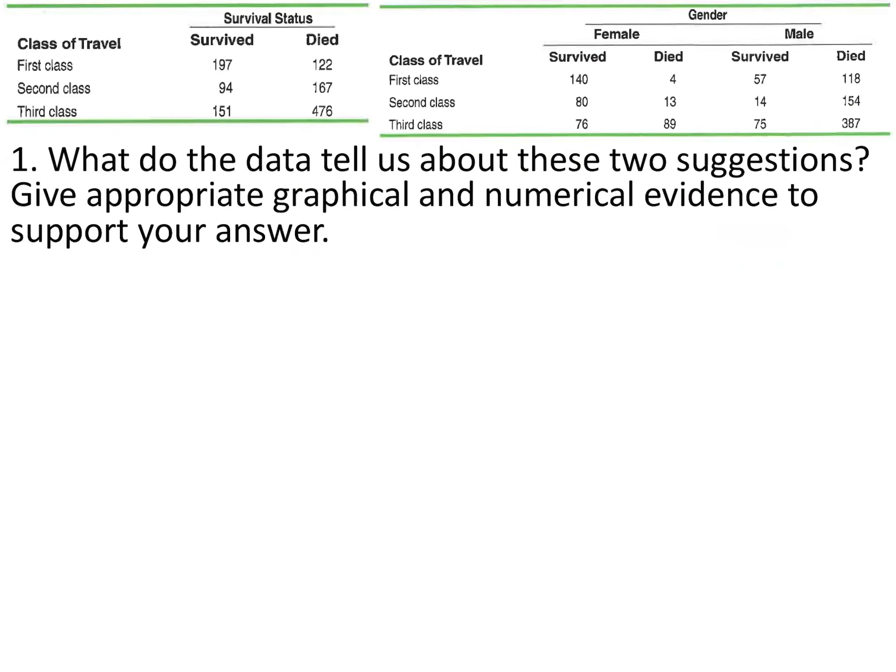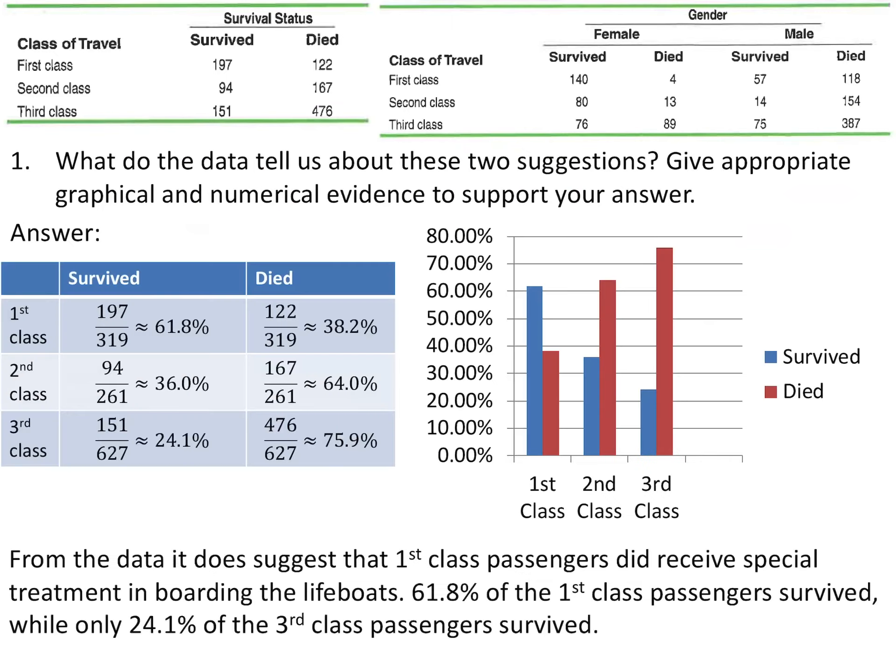Give appropriate graphical and numerical evidence to support your answers. Looking at class first: of the first class passengers, 61.8% survived while 38.2% died. Second class passengers, 36% survived and 64% died. Of the third class passengers, 24.1% survived while 75.9% died. From this data, it does suggest that first class passengers did receive special treatment in boarding the lifeboats, because 61.8% of first class passengers survived and only 24.1% of third class passengers survived.